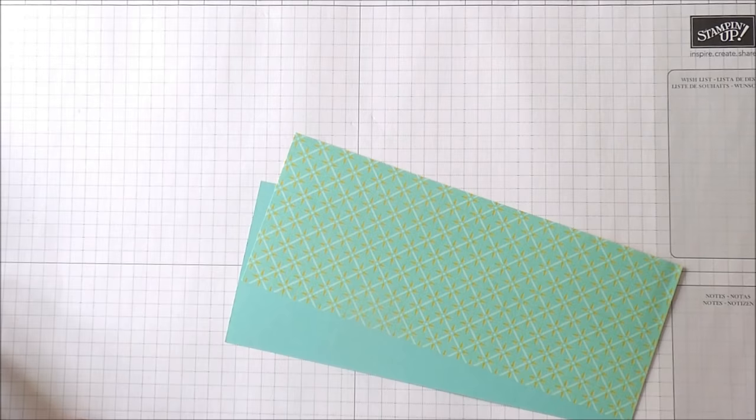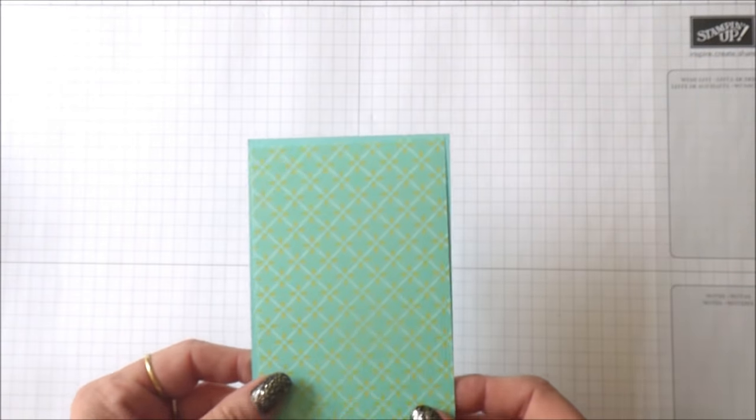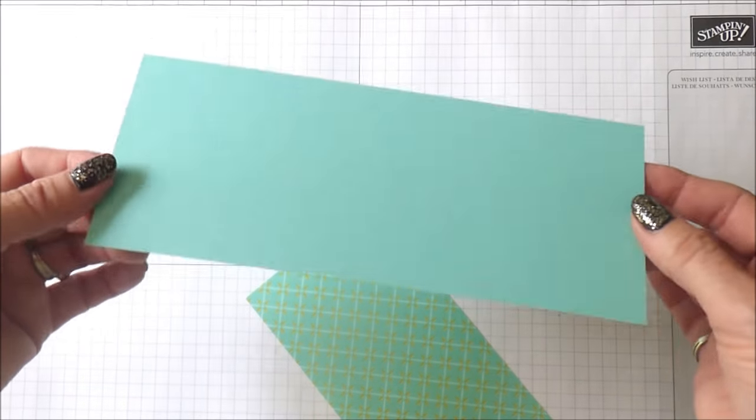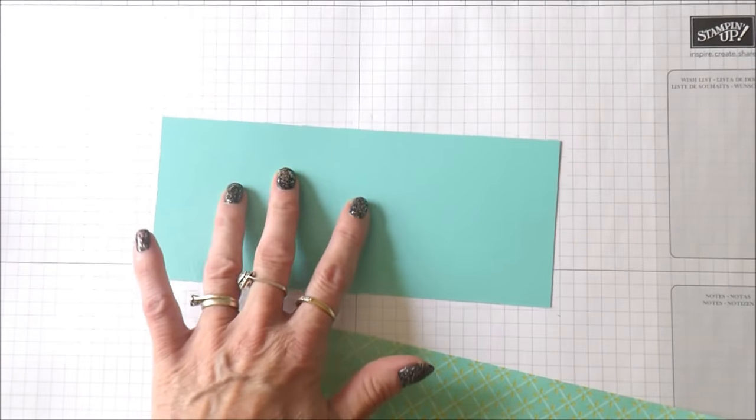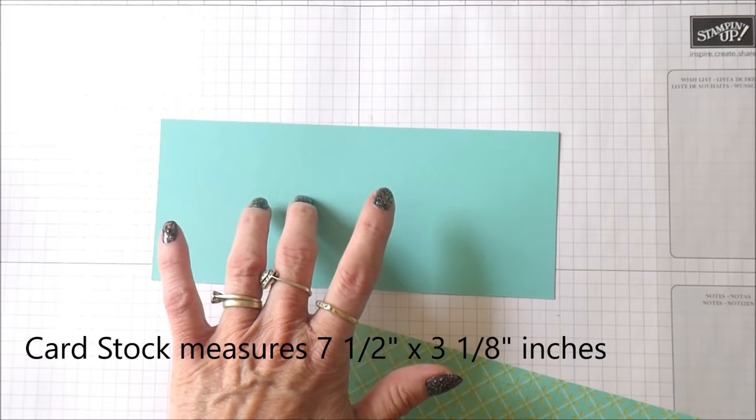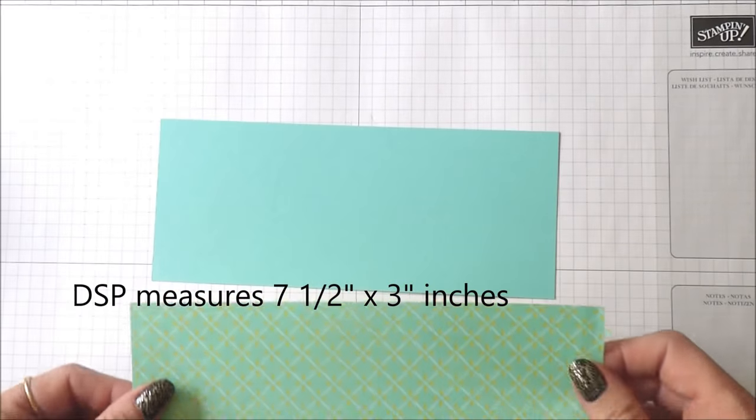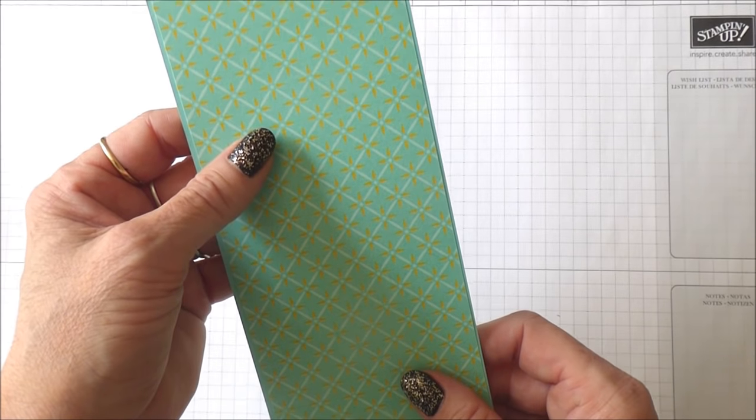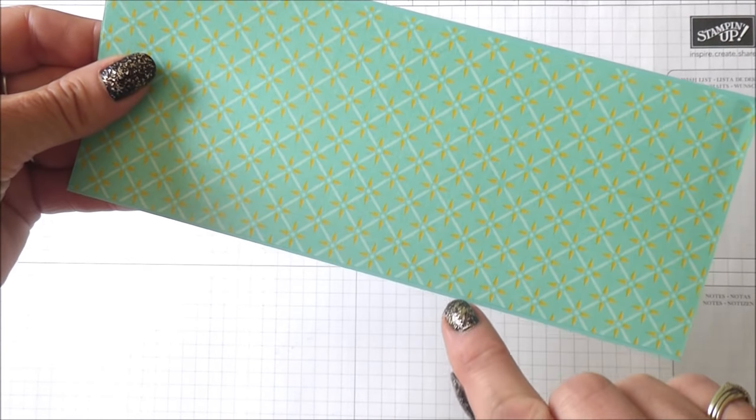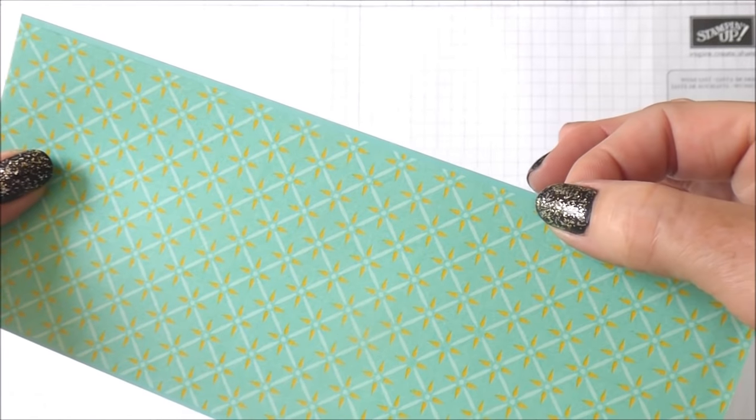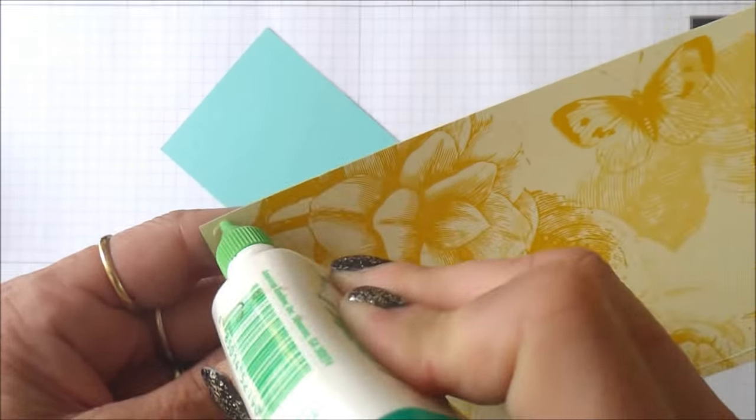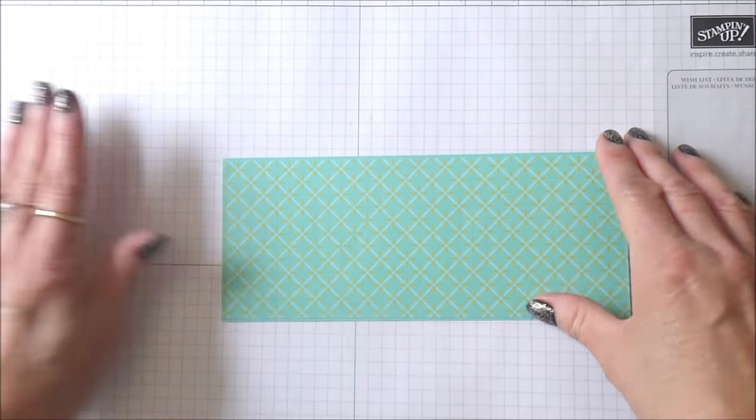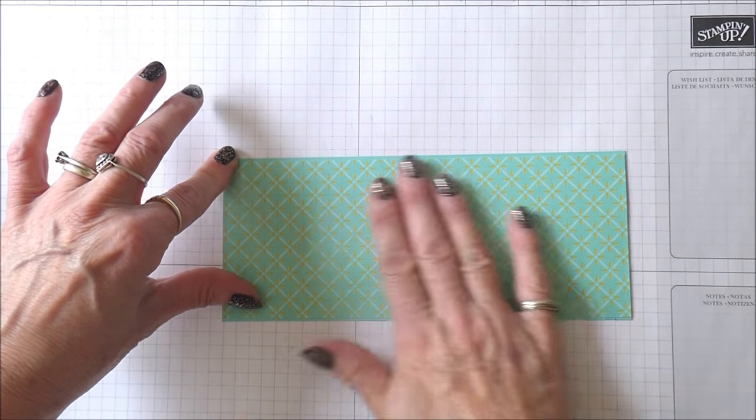To start with, what you're going to need for this project is a piece of cardstock - I'm working with Coastal Cabana here, one of my favorite colors. This piece measures 7.5 inches by 3 1/8 inches, and then I have this piece that measures 7.5 inches by 3 inches. All you're going to do is stick it on there. You'll find that there's just a very slight edge on each side.